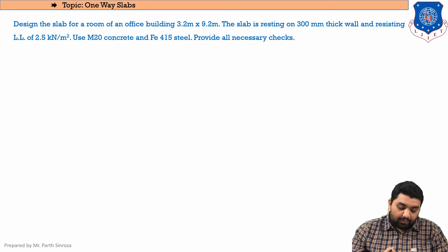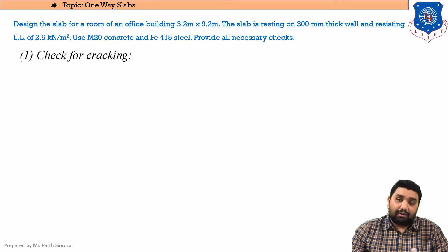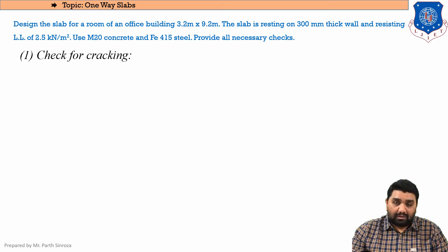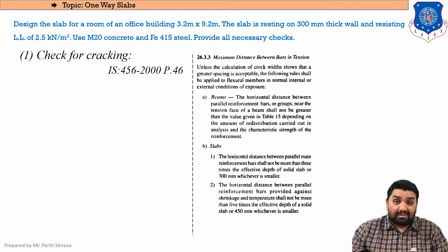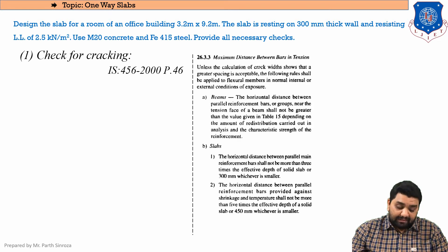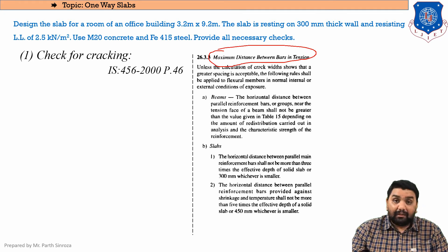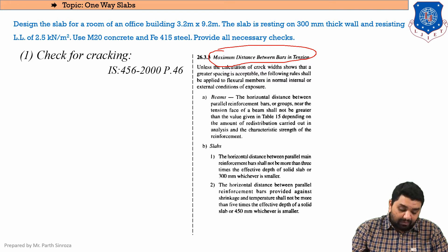There are a total of four checks. The first is the check for cracking — we have designed a slab but will it crack or not? For that we always need to find the spacing of bars. We will be referring to IS 456, page number 46, clause 26.3.3, which mentions maximum distance between bars in tension.